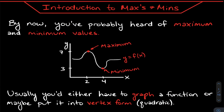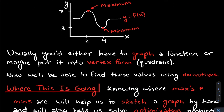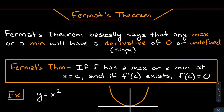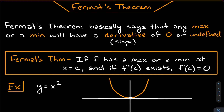First, I'm going to give you an introduction to maxes and mins — what maximum values are and why we care. Then I want to get into finding these max and min values. What we'll find with Fermat's theorem is that at a max or min value, with something like y = x², the slope is going to be zero.